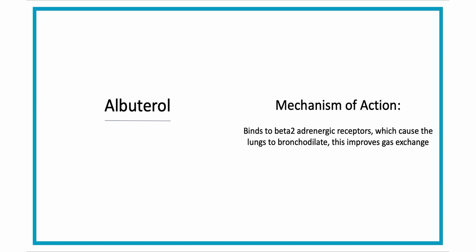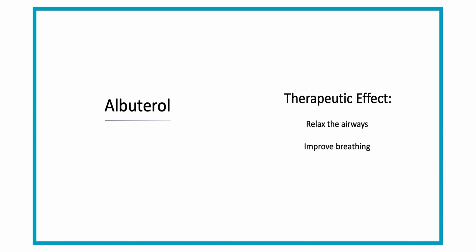The mechanism of action of albuterol is that it binds to beta-2 adrenergic receptors which work within the lungs and cause them to relax or expand, also known as bronchodilation. This smooth muscle relaxation of the airways helps to improve gas exchange. There's also some effect on the beta-1 receptors, which are in the heart. The therapeutic effect is that albuterol helps to relax the airways, causing them to expand, which in turn improves breathing.